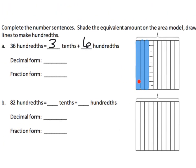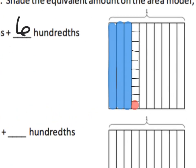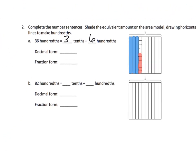The blue shading so far represents three tenths. Now I need to put in six hundredths in red to differentiate: four, five, six. So thirty-six hundredths looks like three full strips plus six little hundredths. That whole piece represents thirty-six hundredths. In decimal notation it's zero point three six, and in fraction form it's thirty-six hundredths.